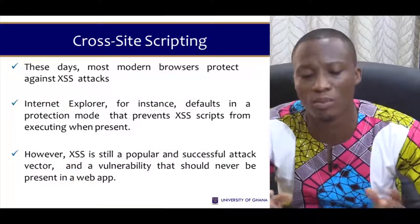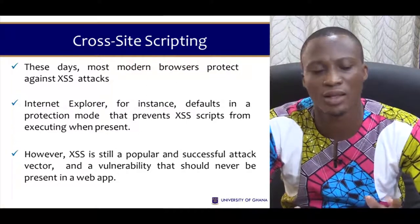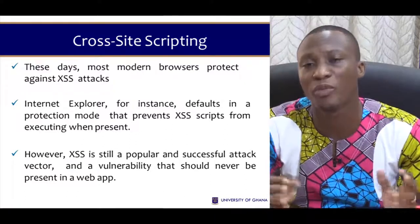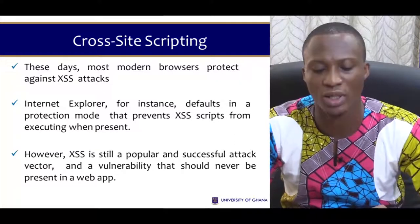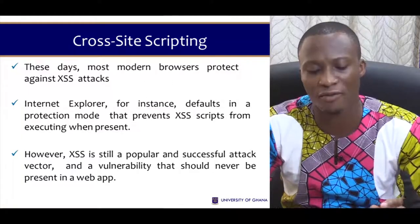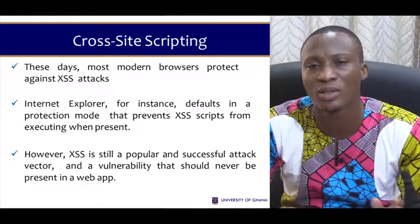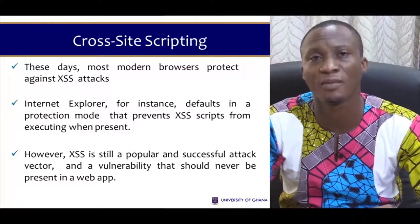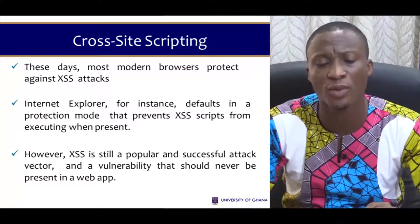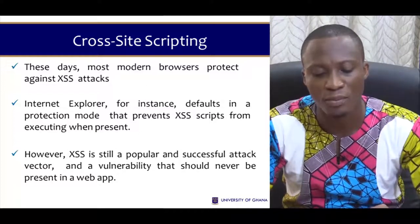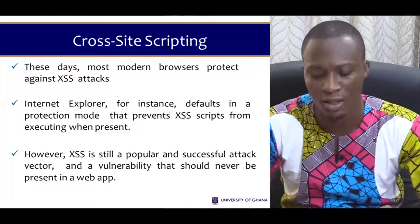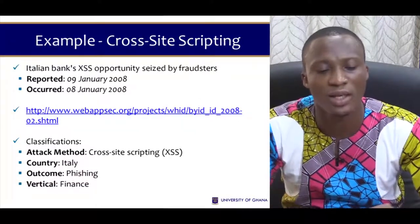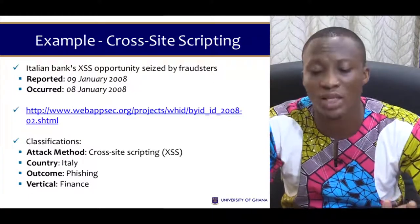Most modern browsers protect against cross-site scripting — Internet Explorer, Firefox, and Chrome all prevent cross-site scripting from executing when it is detected. However, this protection is still not enough. Some developers still introduce cross-site scripting vulnerabilities, and that vulnerability should never be present in a web app — it has to be avoided. A real-world example is the Italian bank's cross-site scripting vulnerability seized by fraudsters.